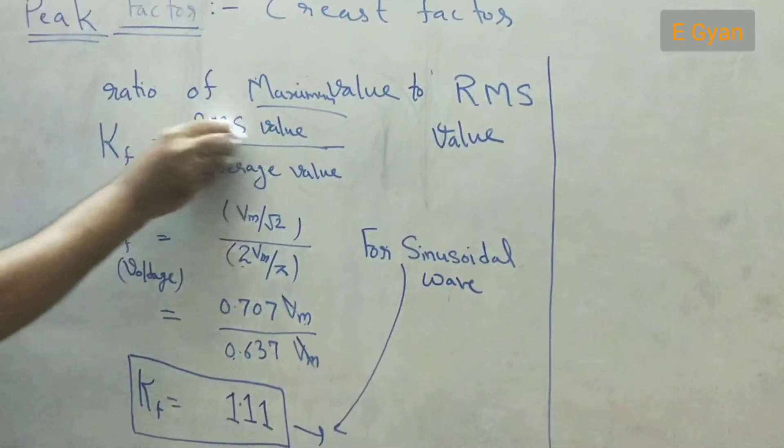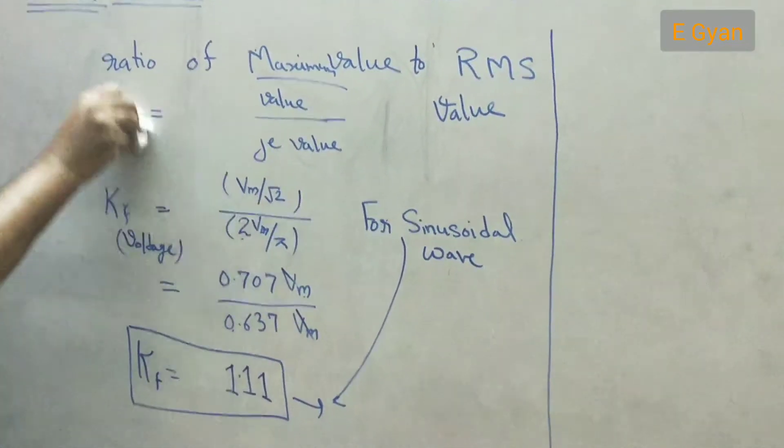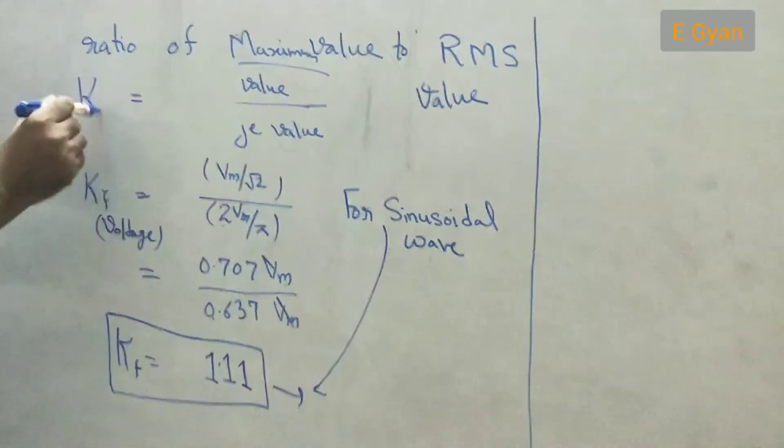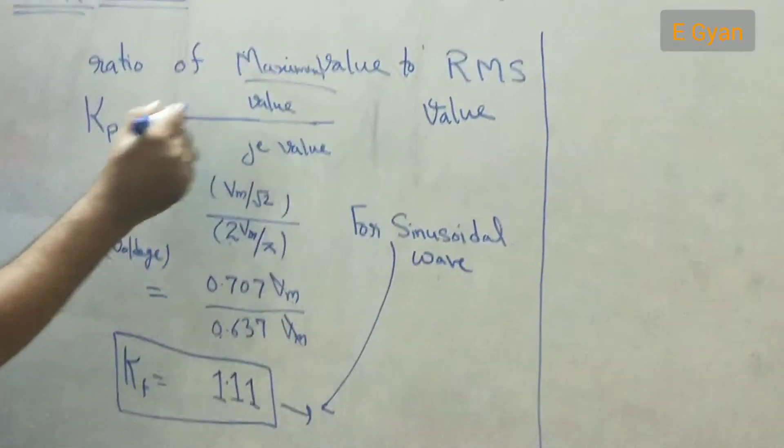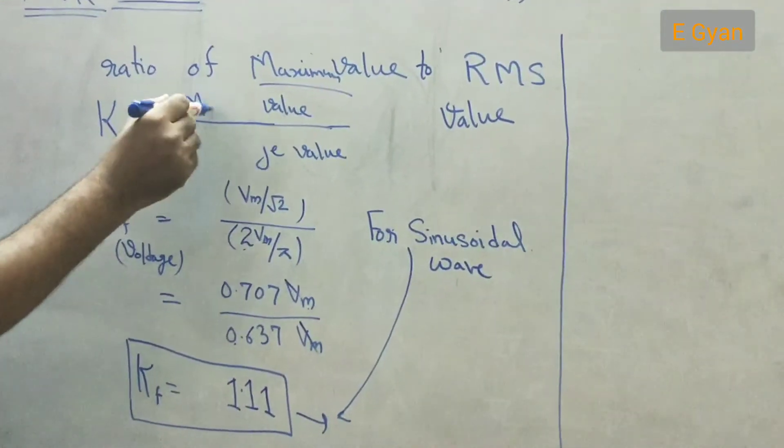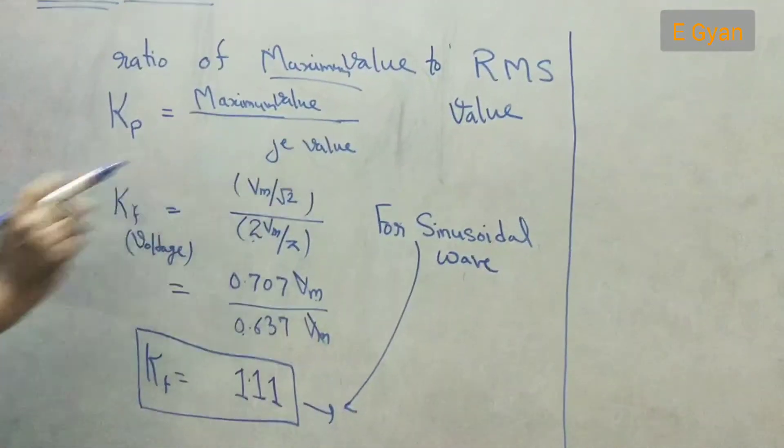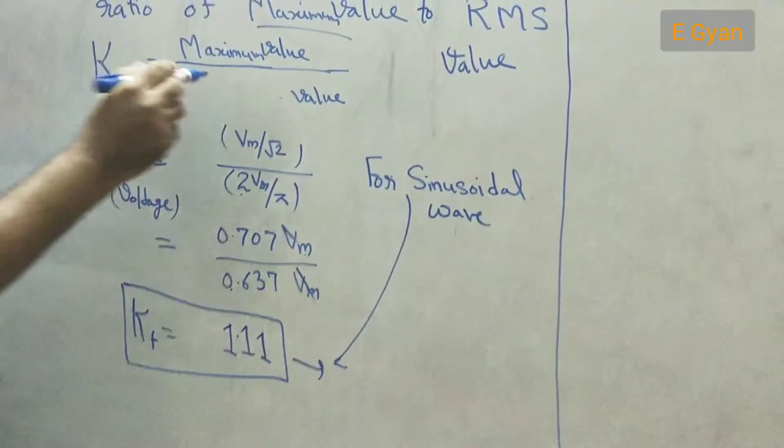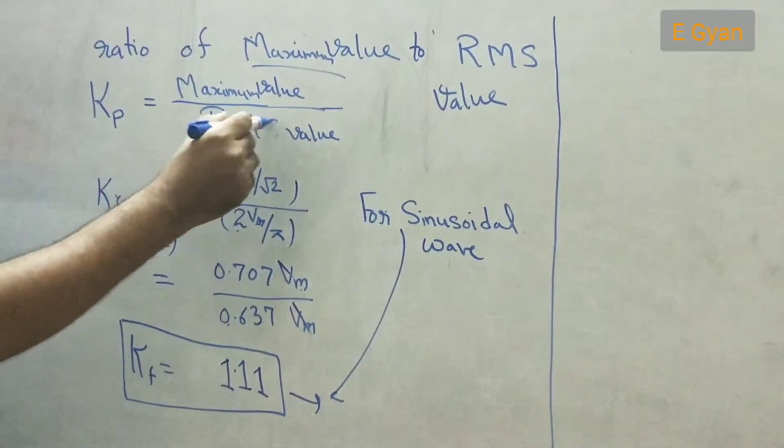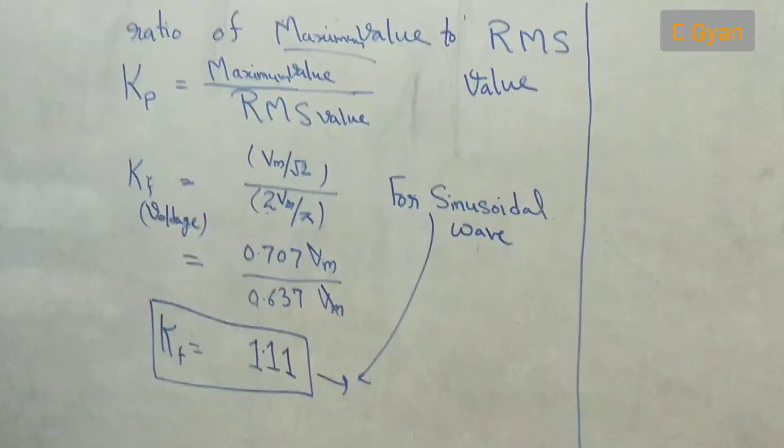So it is ratio of maximum value to RMS value. So now the formula becomes and now we will denote peak factor as Kp and its formula will become maximum value divided by RMS value.